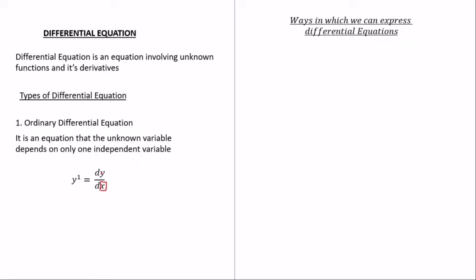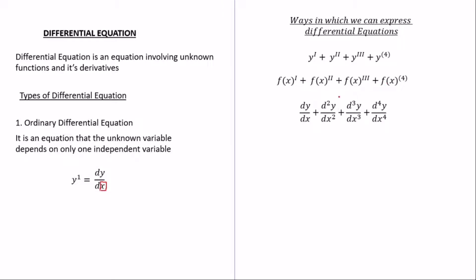There are three ways in which we can express a differential equation. The first: y with one slash means the first derivative, two slashes means the second derivative, and when the number is in brackets it means it's the derivative — not an exponent. The second way uses function notation like f(x). The third way uses Leibniz notation: dy/dx, d²y/dx², and so on.